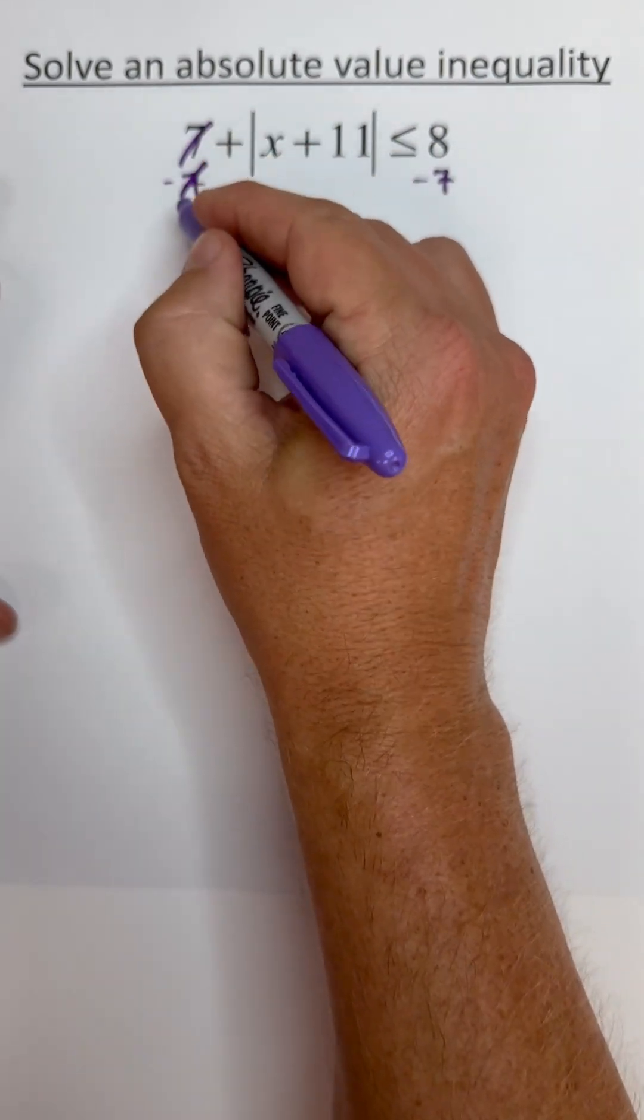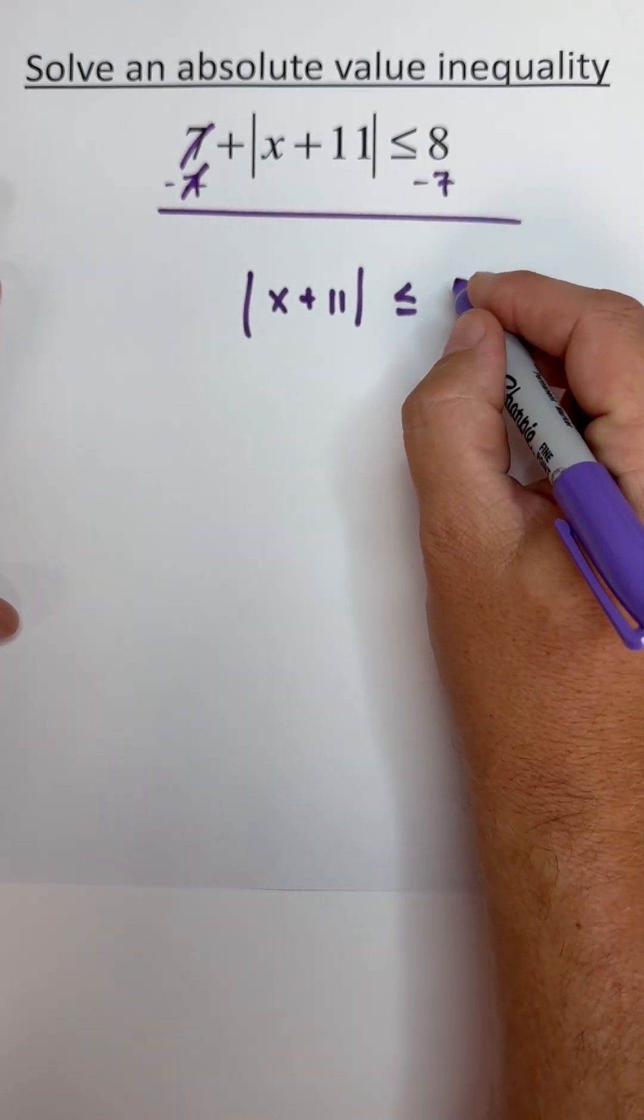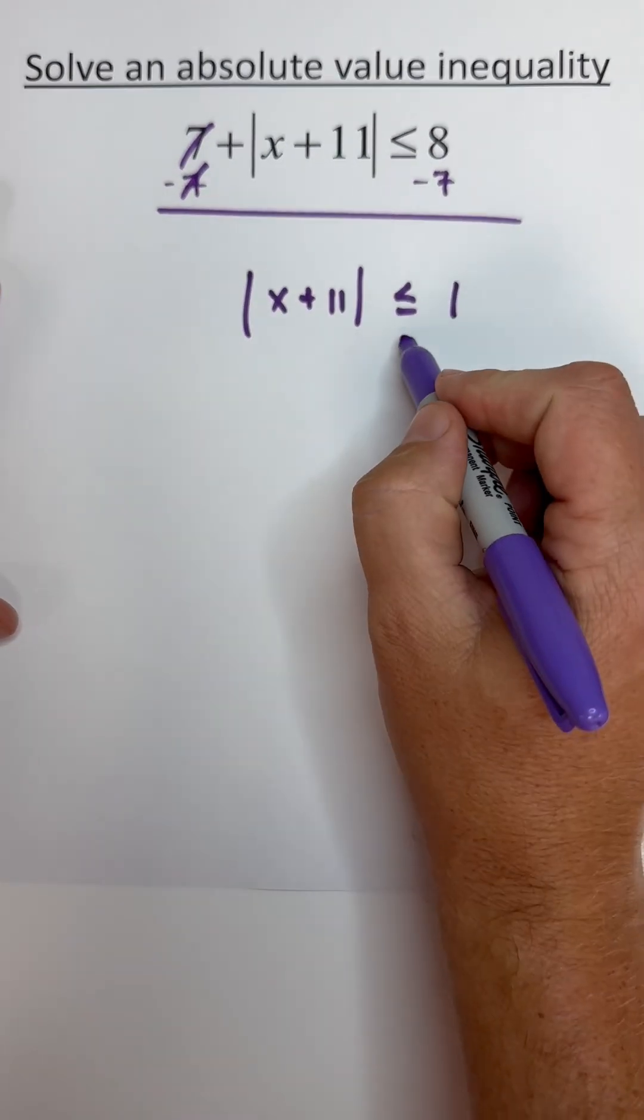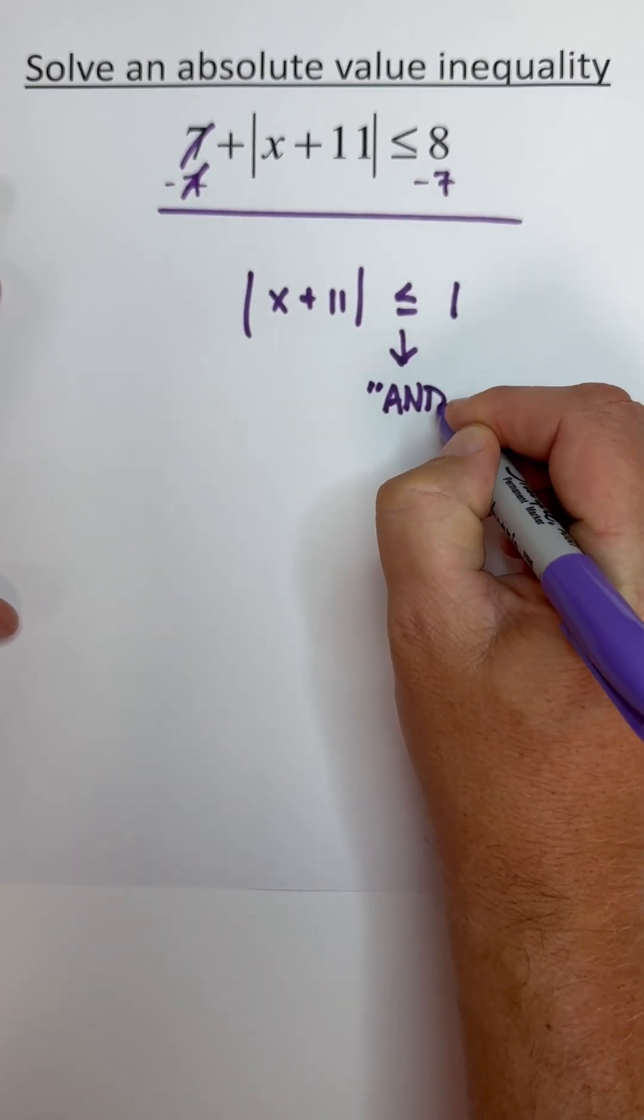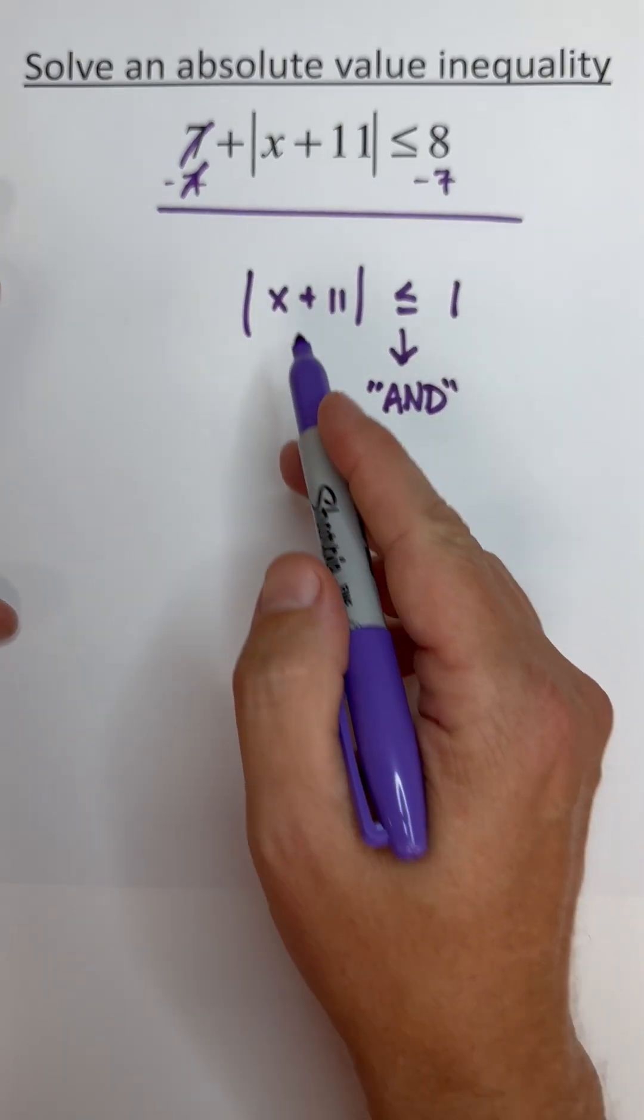So we get absolute value of x plus 11 is less than or equal to one. Now with a less than or equal to, this is like an and statement compound inequality. So I'm going to first just rewrite it as it is without the absolute value bars.